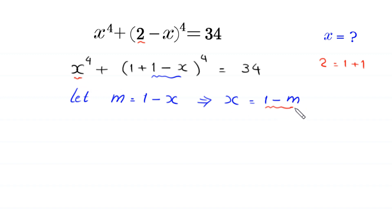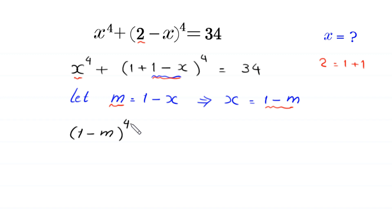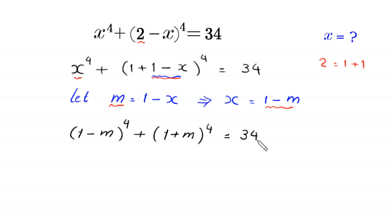We replace x with (1 minus m) and replace (1 minus x) with m. Then the equation becomes (1 minus m) whole to the power 4 plus (1 plus m) whole to the power 4 is equal to 34.